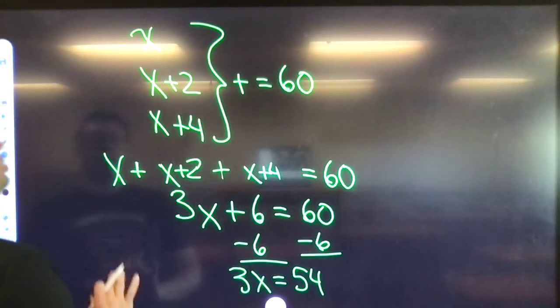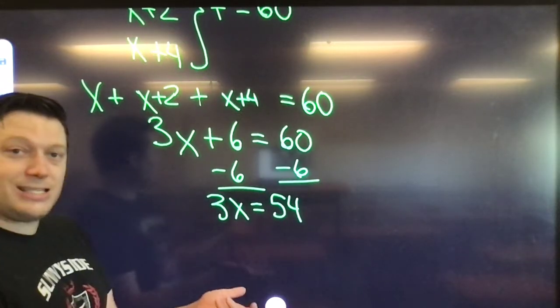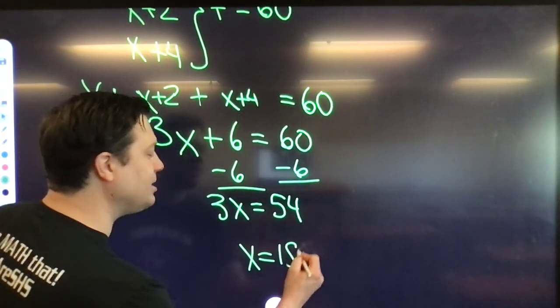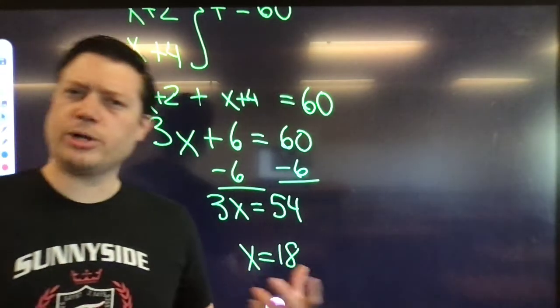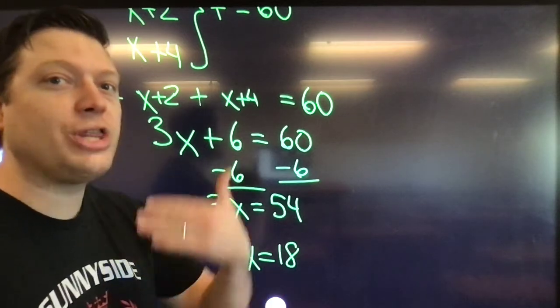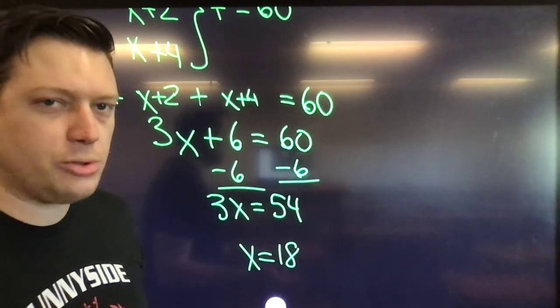And then, using the last step of a two-step problem, divide both sides by 3, X does equal 18, spoiler alert. Now, if that's the first of the consecutive numbers, we can automatically know what the next even number up is just by counting.